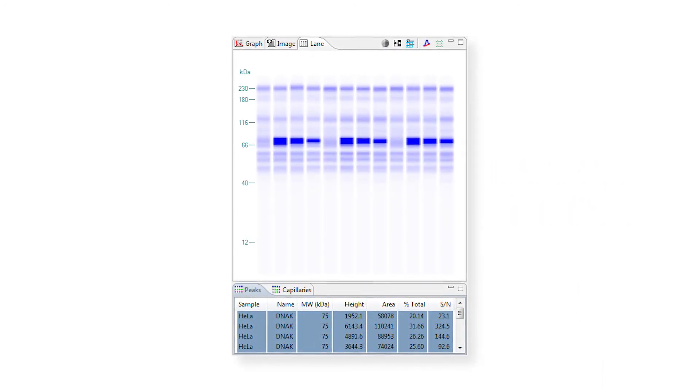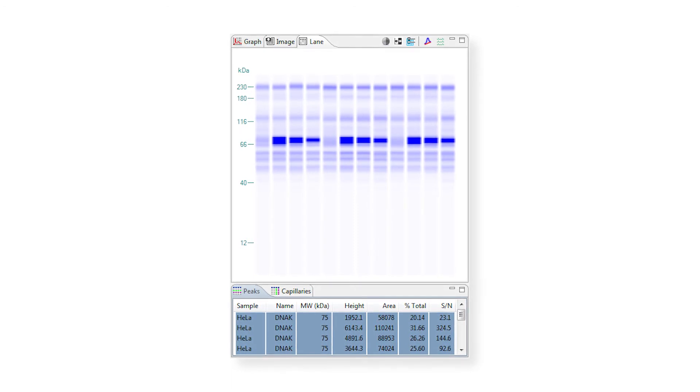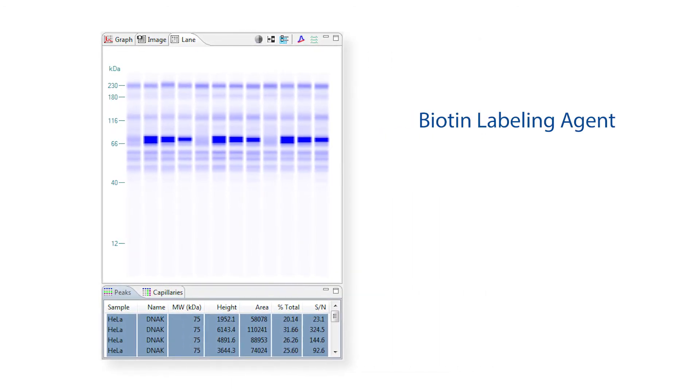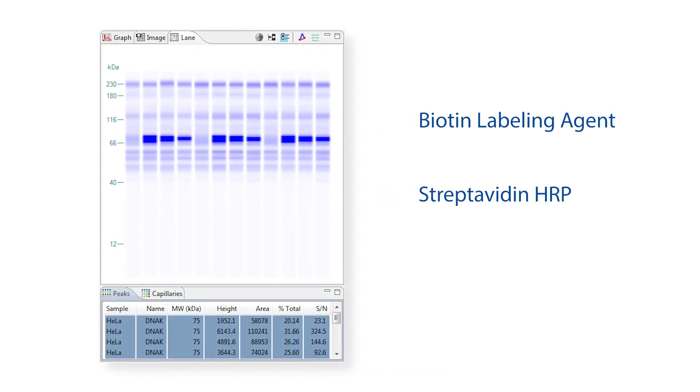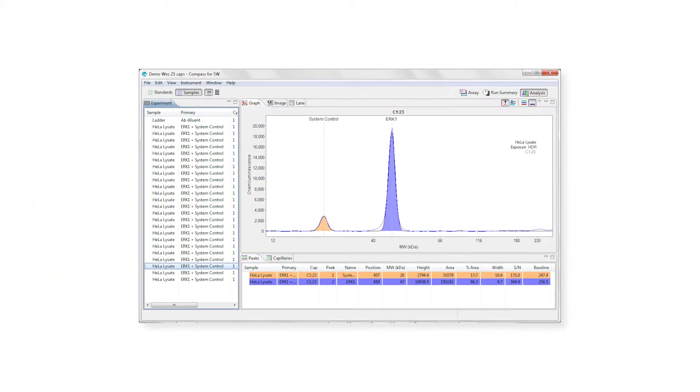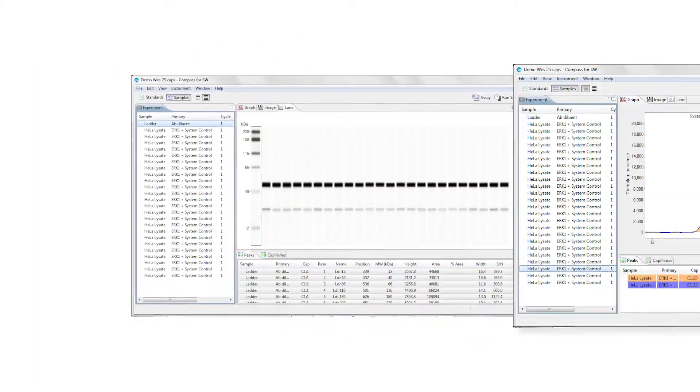Interested in looking at all the proteins in your lysate? Just leave out the antibodies and use a biotin labeling agent and streptavidin HRP to quantify total protein. Results are reported by Electropherogram and BlotView.